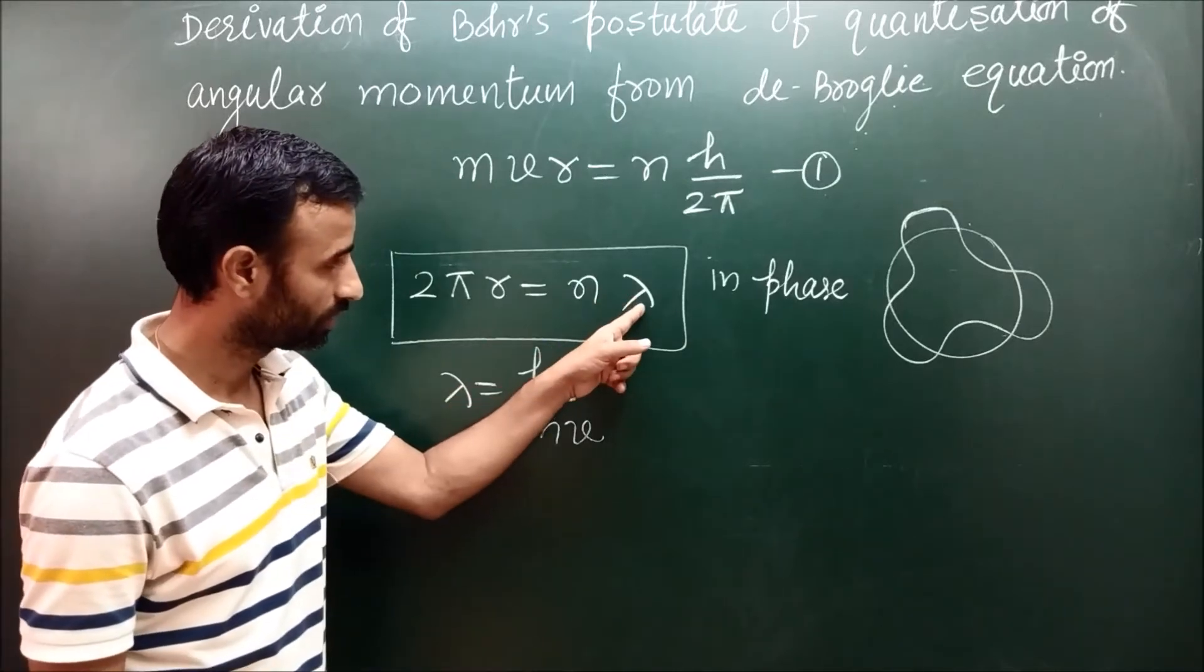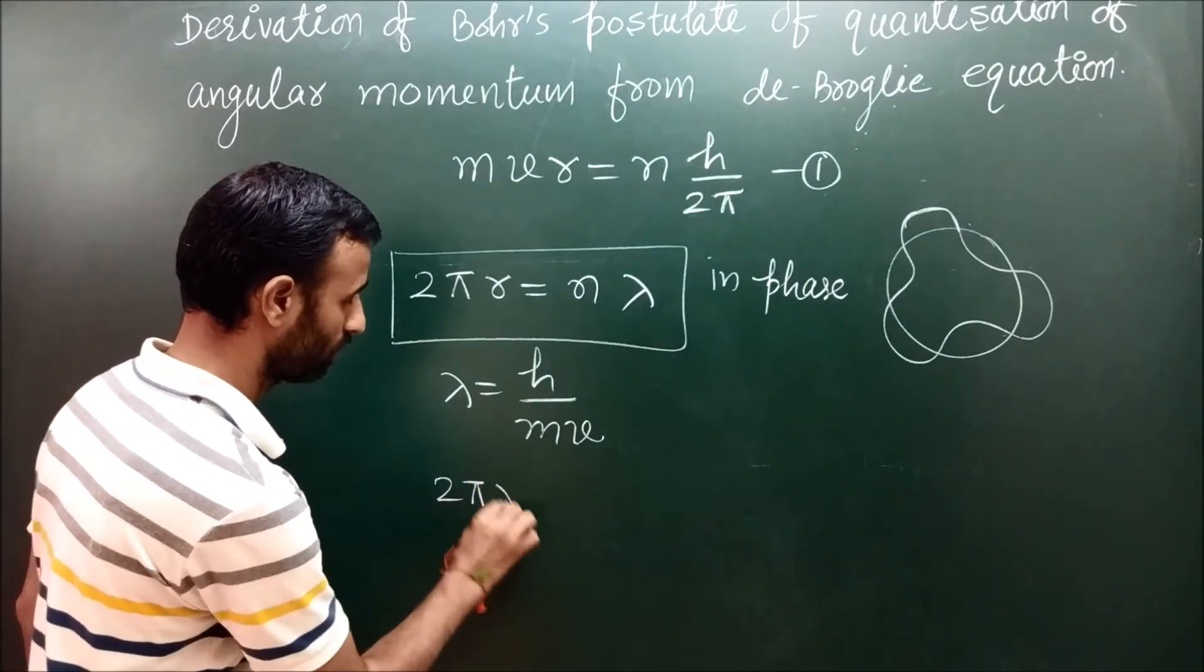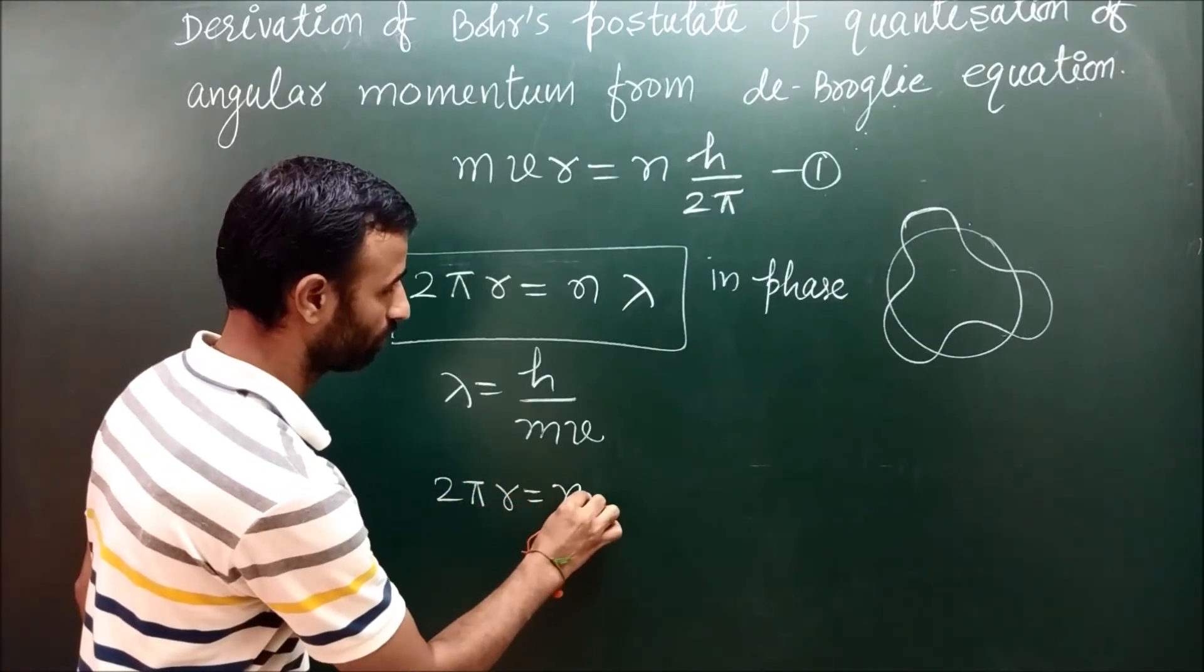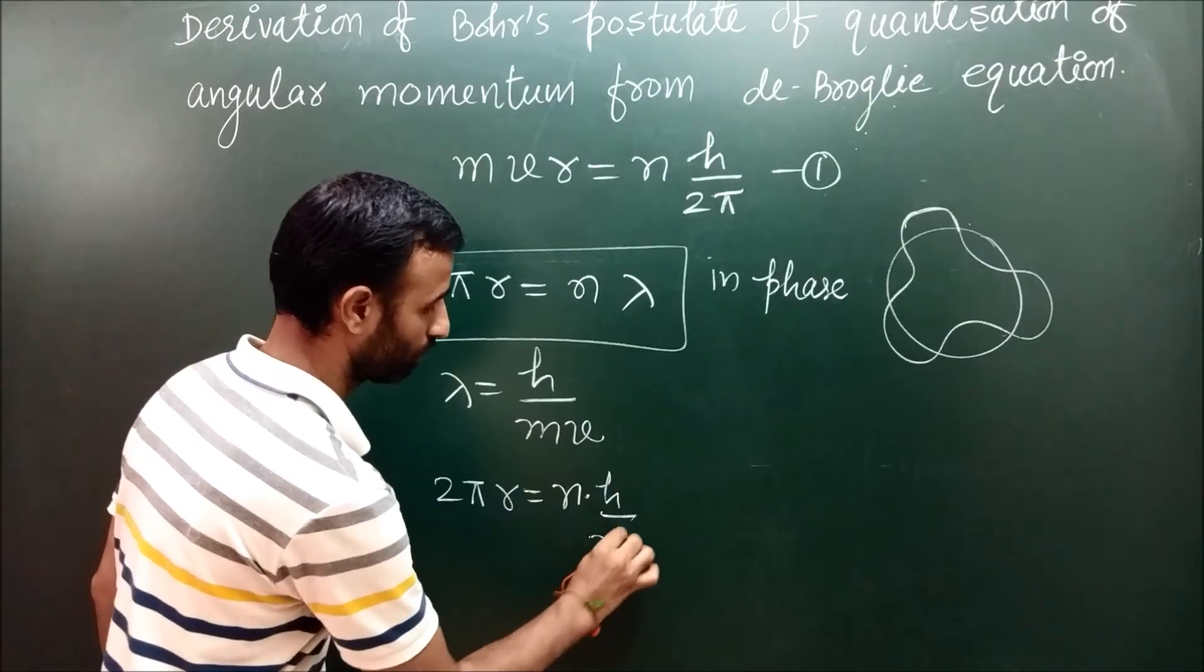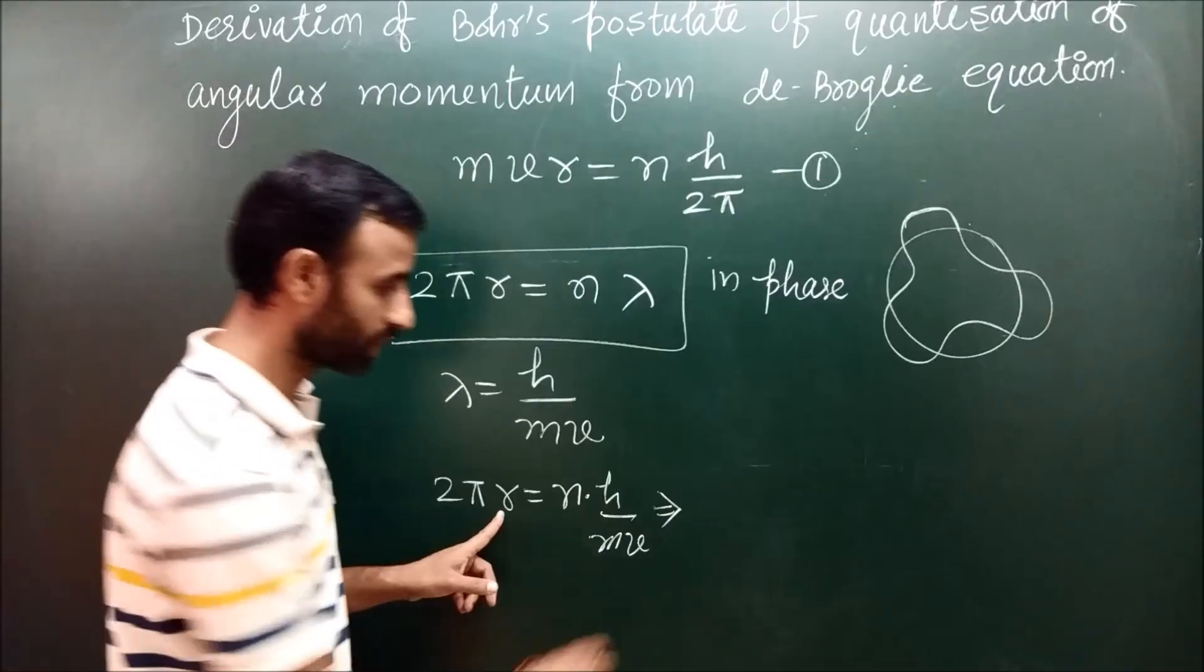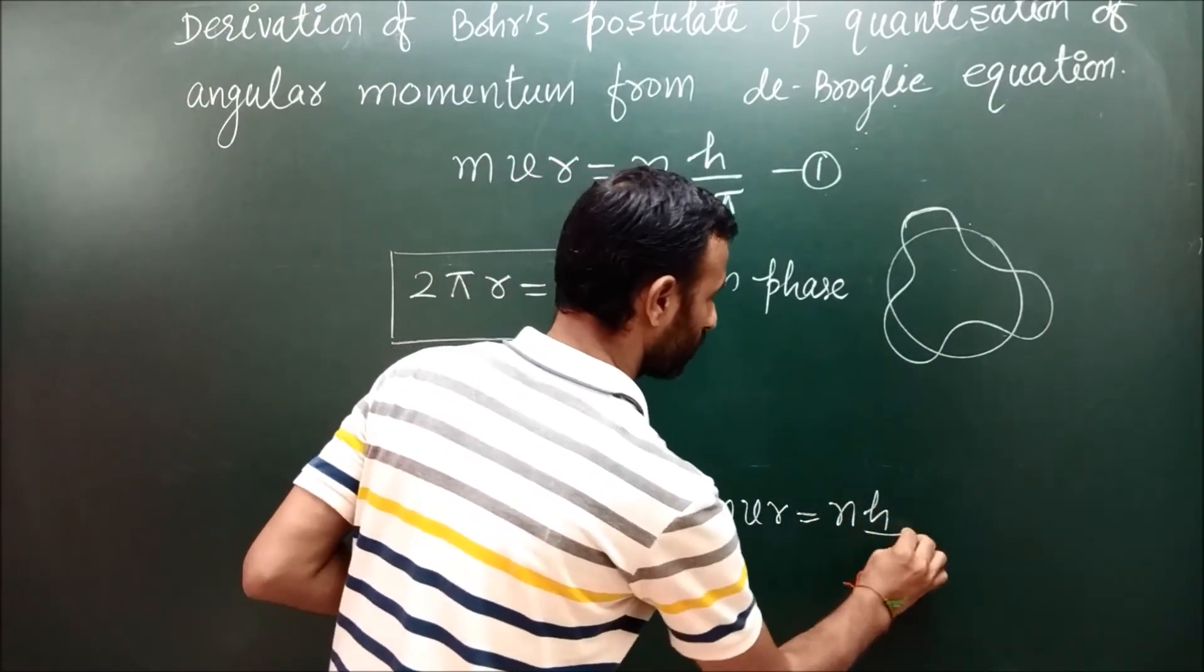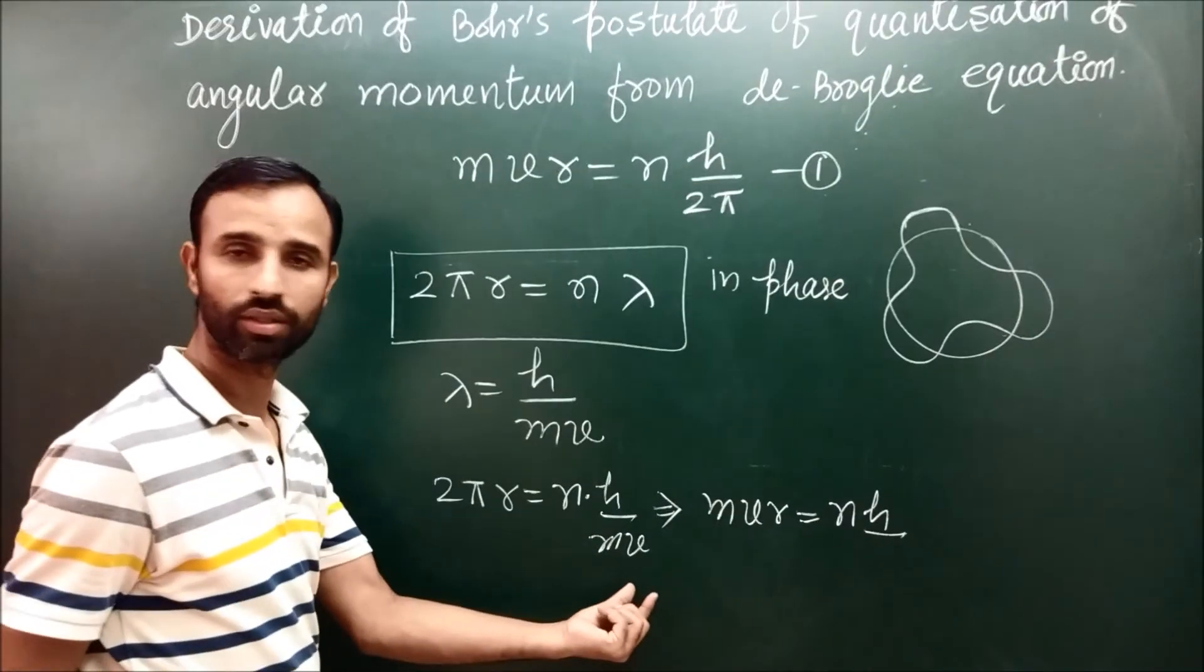If we put h upon mv instead of λ, it becomes 2πr equal to n h upon mv. Moving mv to this side along with r and n h 2π in the denominator.